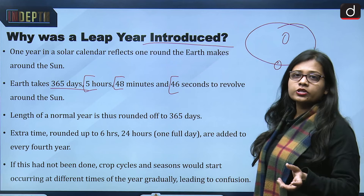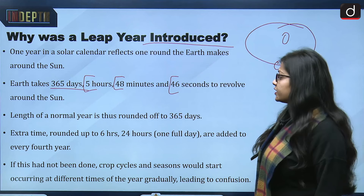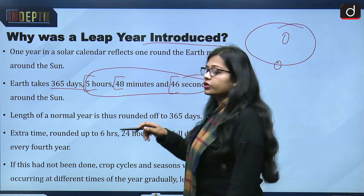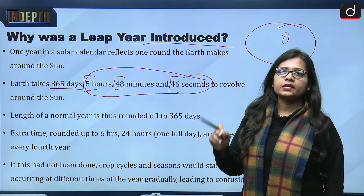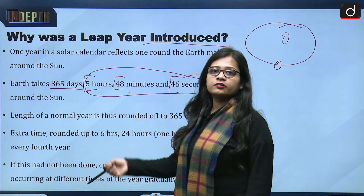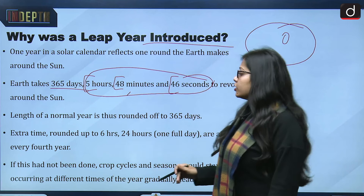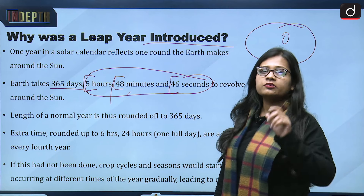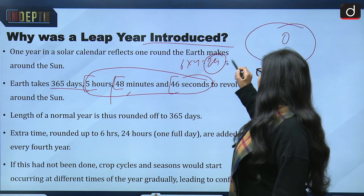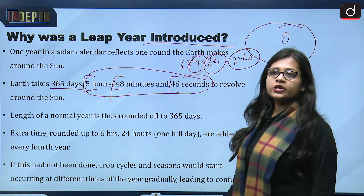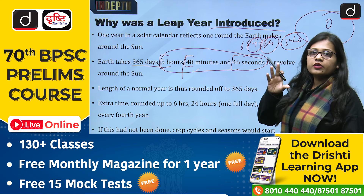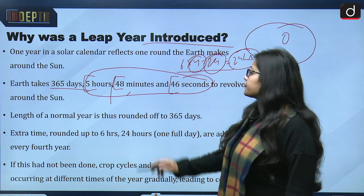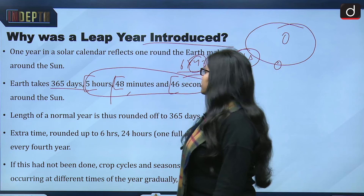The earth takes 365 days, 5 hours, 48 minutes, and 46 seconds to revolve around the sun. This is not exactly 365 days nor 366 days — it falls in between. If we approximate the 5 hours 48 minutes to roughly 6 hours, then 6 hours multiplied by 4 years equals 24 hours. So after every 4 years, these extra hours combine to form one full extra day — the leap day.